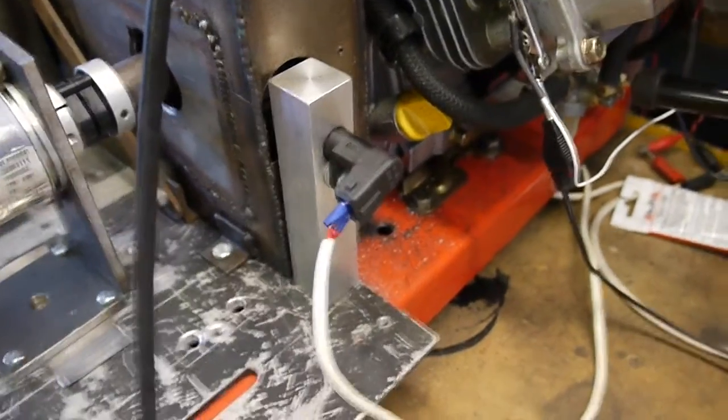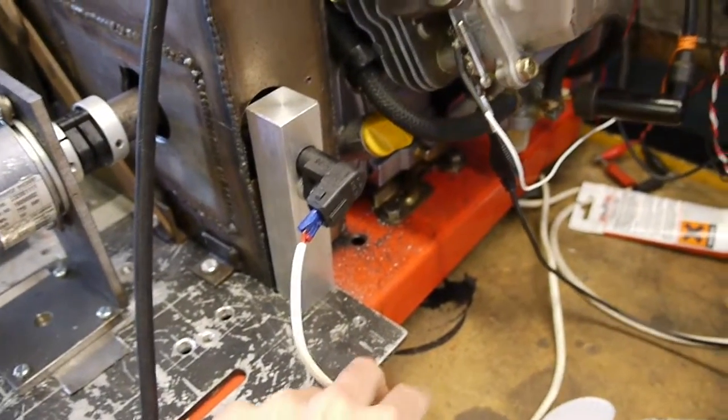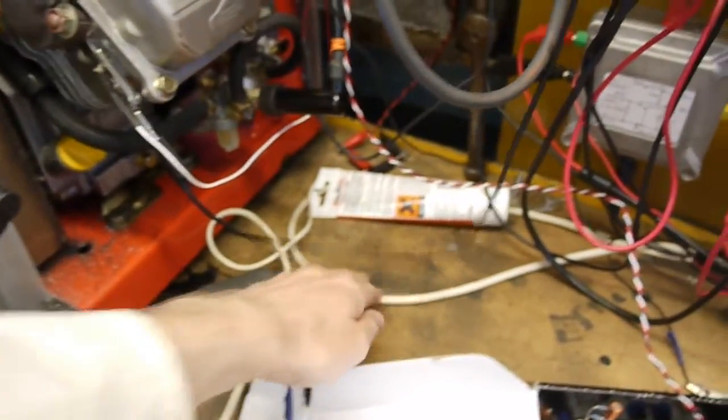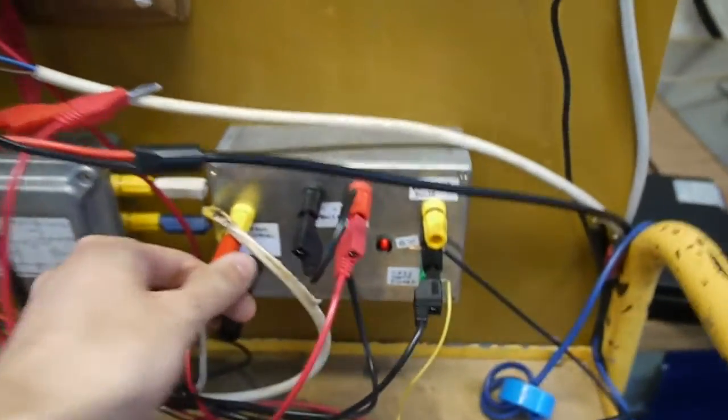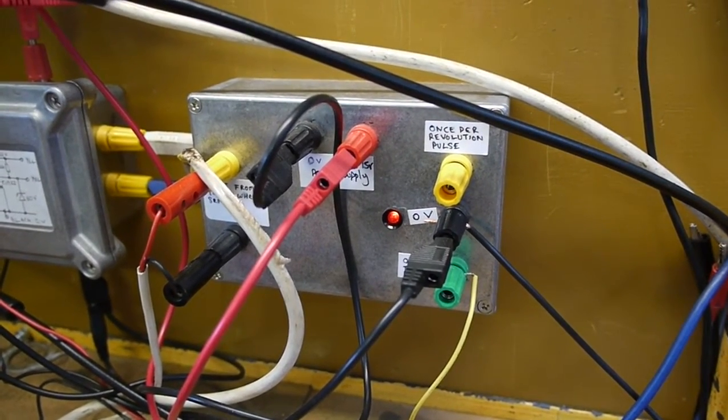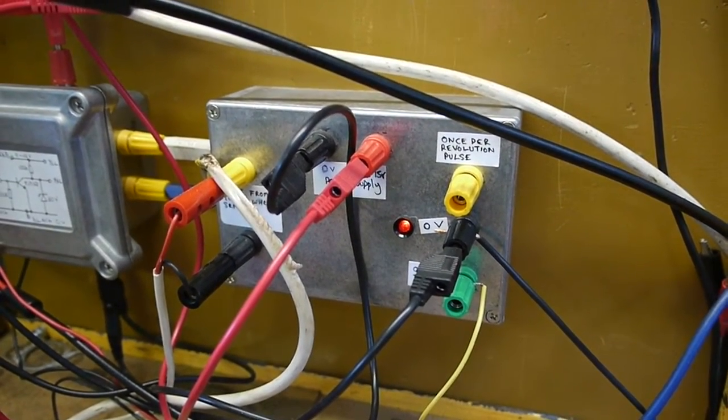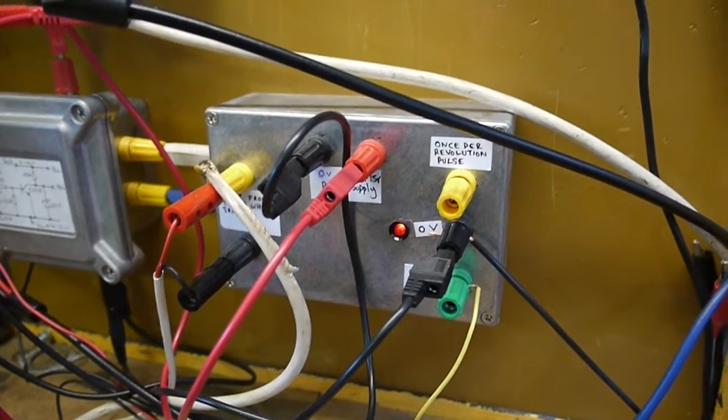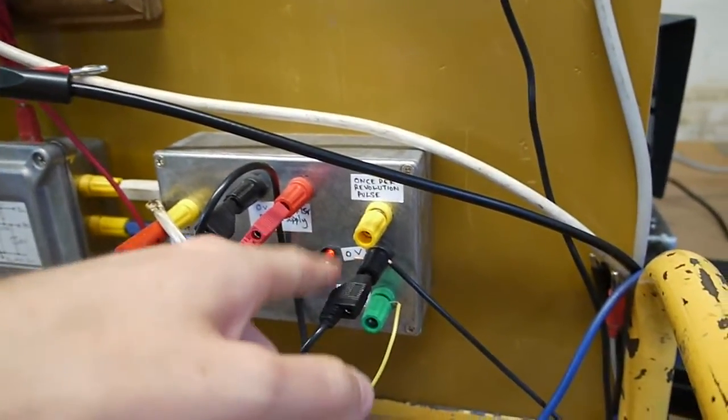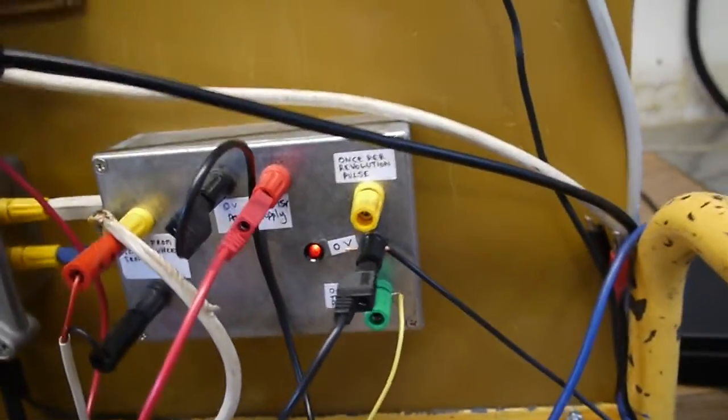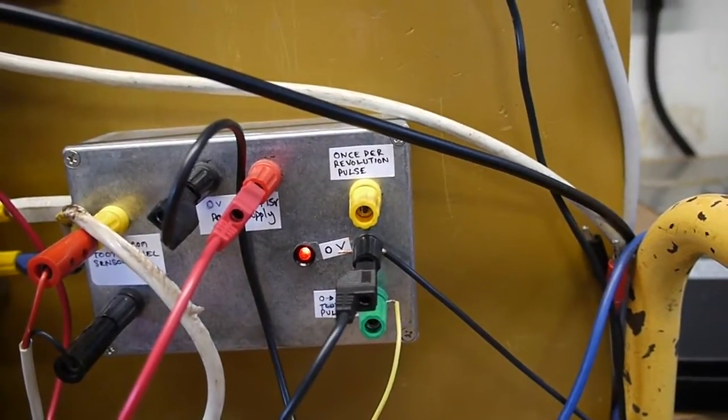Which is a variable reluctance sensor. That's connected through some cabling to here, which is a conditioning box. So that takes the sawtooth signal from the crank position sensor, and using an op amp it thresholds it and outputs a 5 volt signal, which is a nice clean square wave ready for a microcontroller.